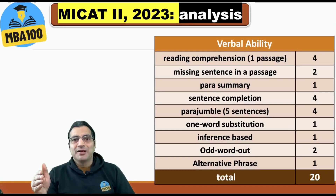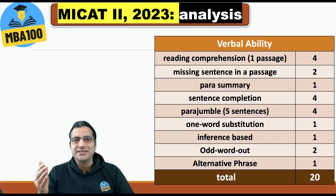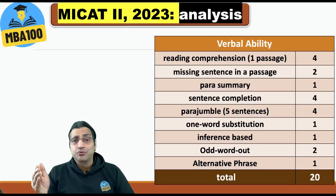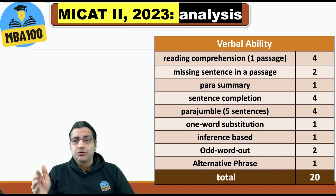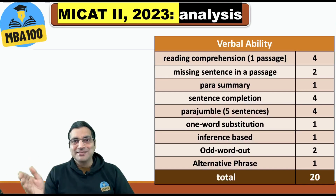In verbal ability: reading comprehension — 4 questions from just one passage. Missing sentence in a passage — 2 questions, similar to what appeared in CAT 2022 — where the passage had four blank spaces (A, B, C, D) and you had to decide where the given sentence would fit.